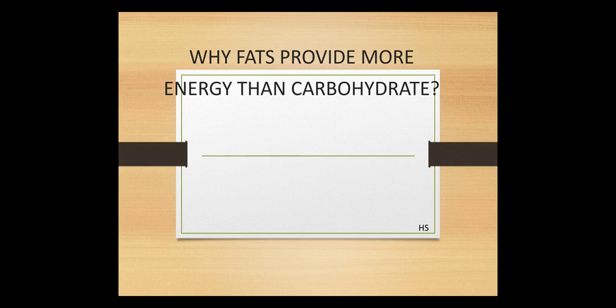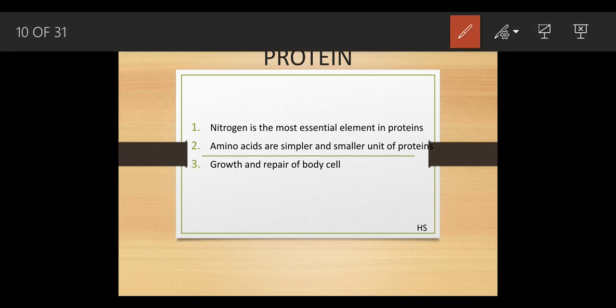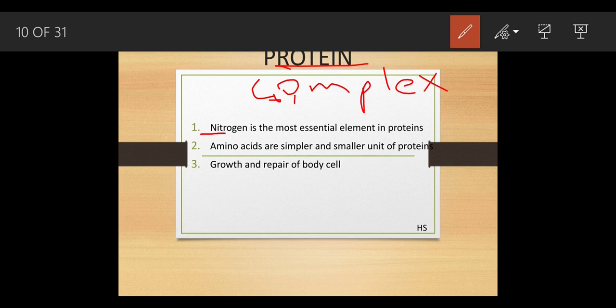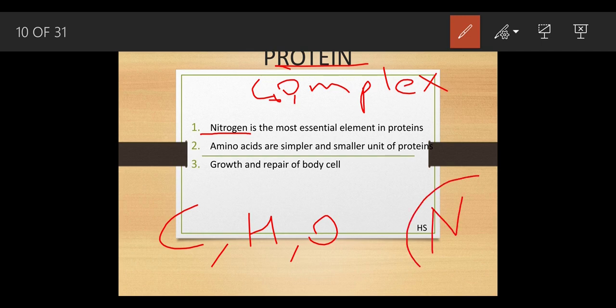Proteins are very important large chemical molecules and are also in complex form, just like fats. Nitrogen is the most essential element in proteins. Carbon, hydrogen, and oxygen are present in each nutrient, but nitrogen makes proteins unique. Without nitrogen, there is no formation of protein inside the body.